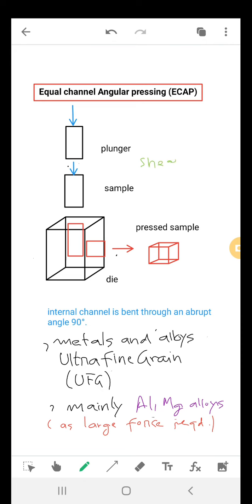Deformation occurs through the introduction of an intense strain. As the sample passes through the sheared plane, the sample emerges from the die without experiencing any change in the cross-sectional dimension.